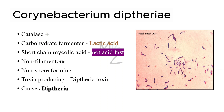Corynebacterium diphtheriae is a carbohydrate fermenter. When it ferments carbohydrates, lactic acid is produced. This bacterium has short-chain mycolic acid — that's why it is not an acid-fast bacterium. It is non-filamentous and does not produce spores, but it does produce a toxin: the diphtheria toxin, which is responsible for causing the famous disease, diphtheria.